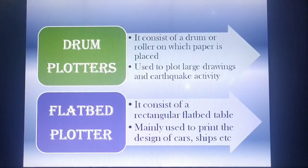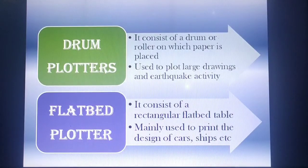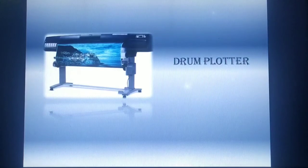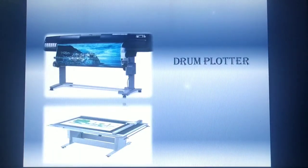The second plotter is the flatbed plotter. It consists of a rectangular flatbed table and a paper is spread and fixed over it. They are used to print the designs of cars, ships, aircrafts, buildings, and highways. Now let's check the pictures of these two plotters — the first one is the drum plotter and the second one is the flatbed plotter.